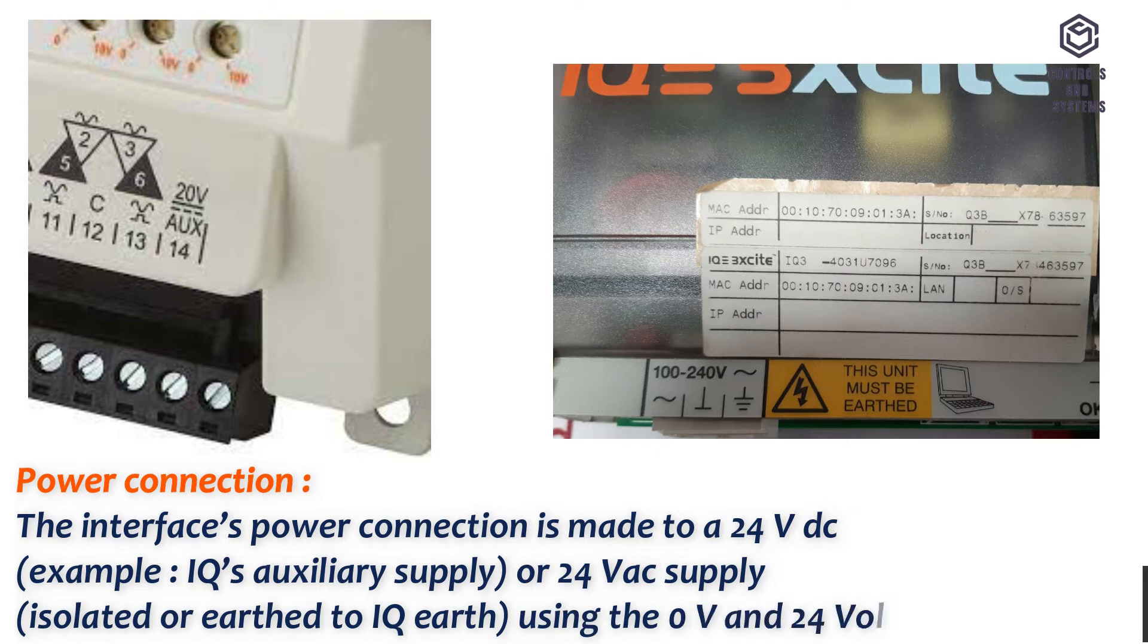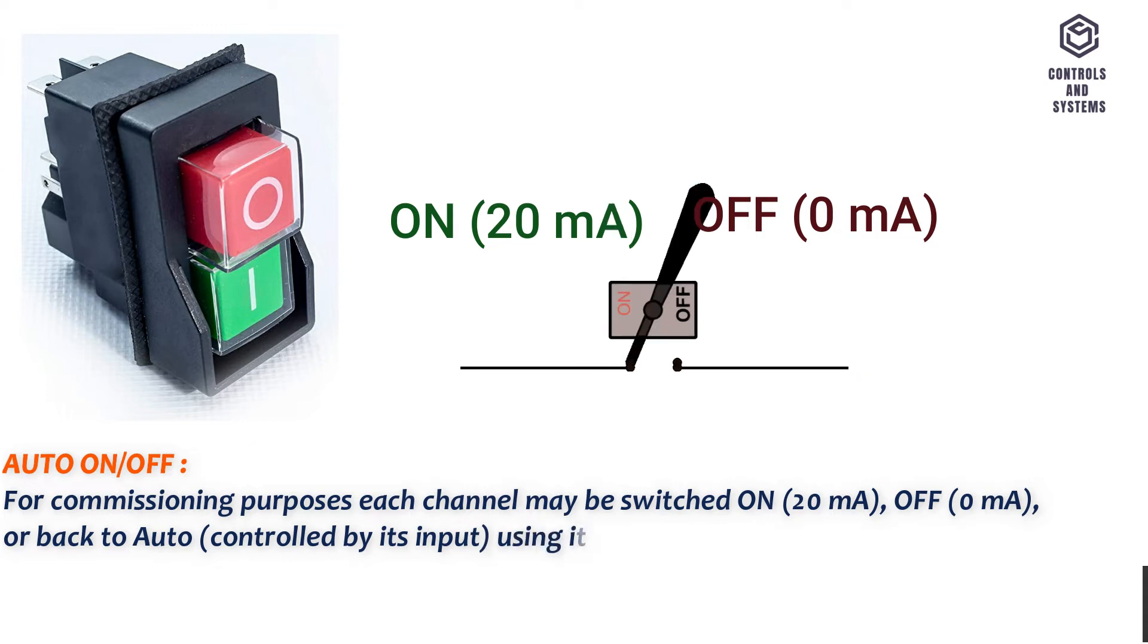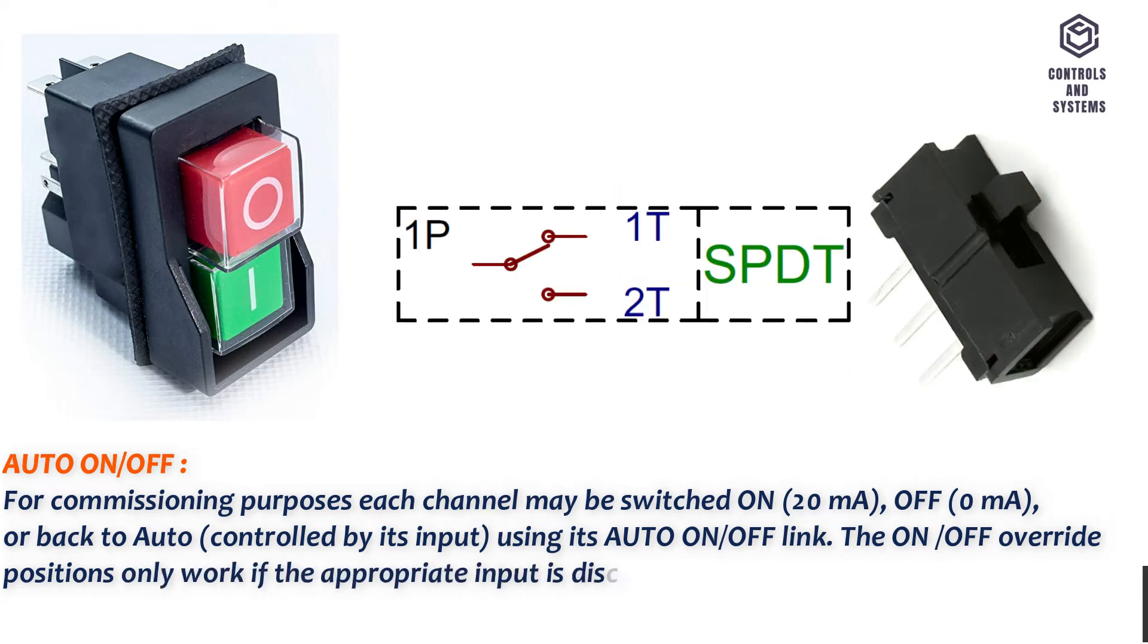Auto on/off: For commissioning purposes each channel may be switched on 20 milliamps, off 0 milliamps, or back to auto controlled by its input, using its auto on/off link. The on/off override positions only work if the appropriate input is disconnected.